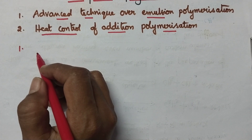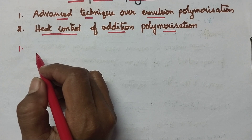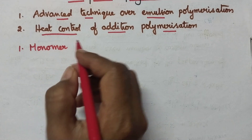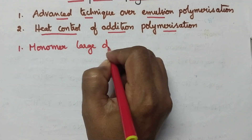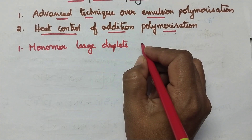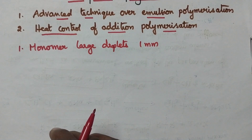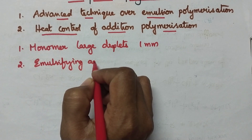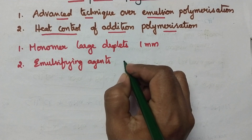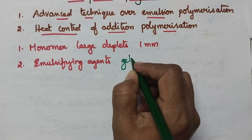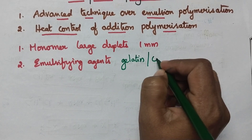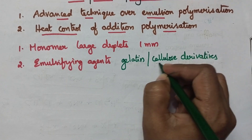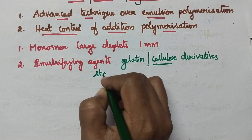In this suspension polymerization we will consider three elements for the preparation of polymers such as polyvinyl chloride, polyvinyl acetate, polystyrene, etc. Initially, the monomer is suspended in the form of relatively large droplets of the size 1 mm in a large amount of water. Then emulsifying agents such as gelatin and cellulose derivatives are added. The importance of cellulose derivatives is that it helps to form a stable emulsion.